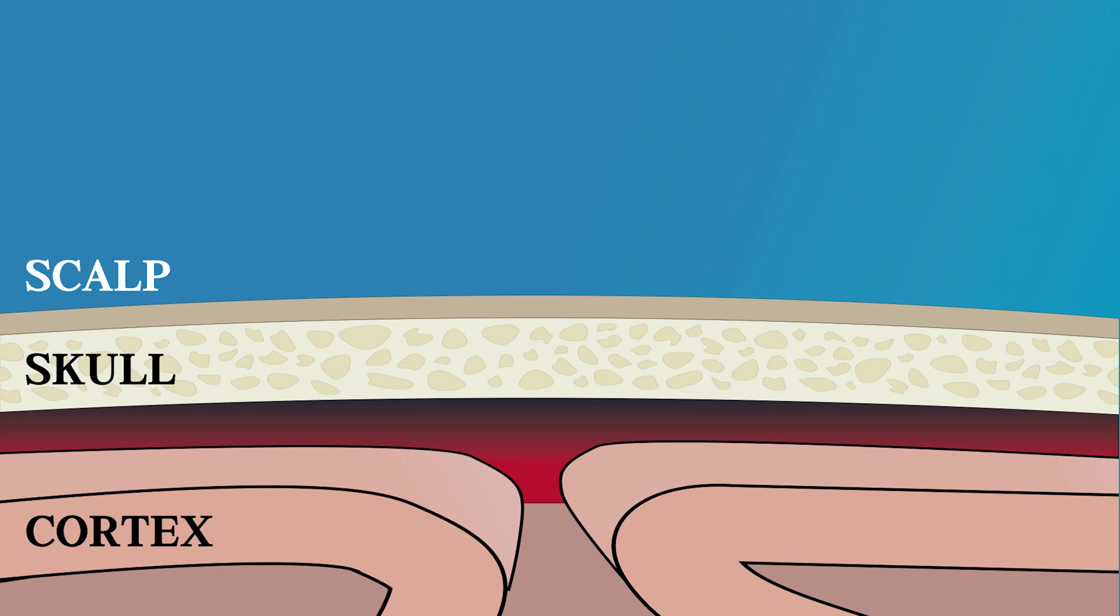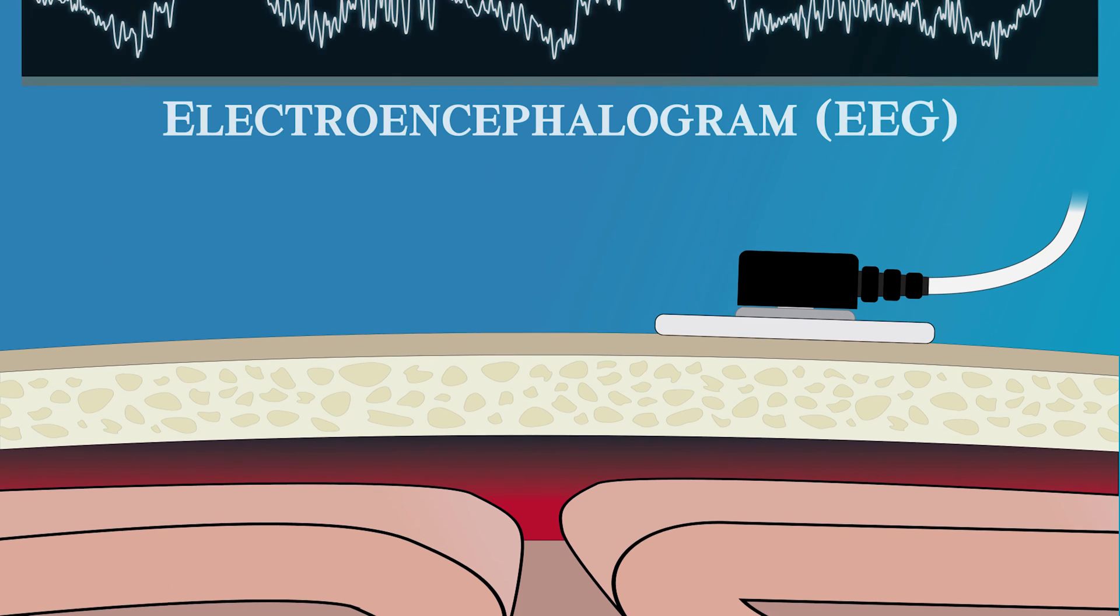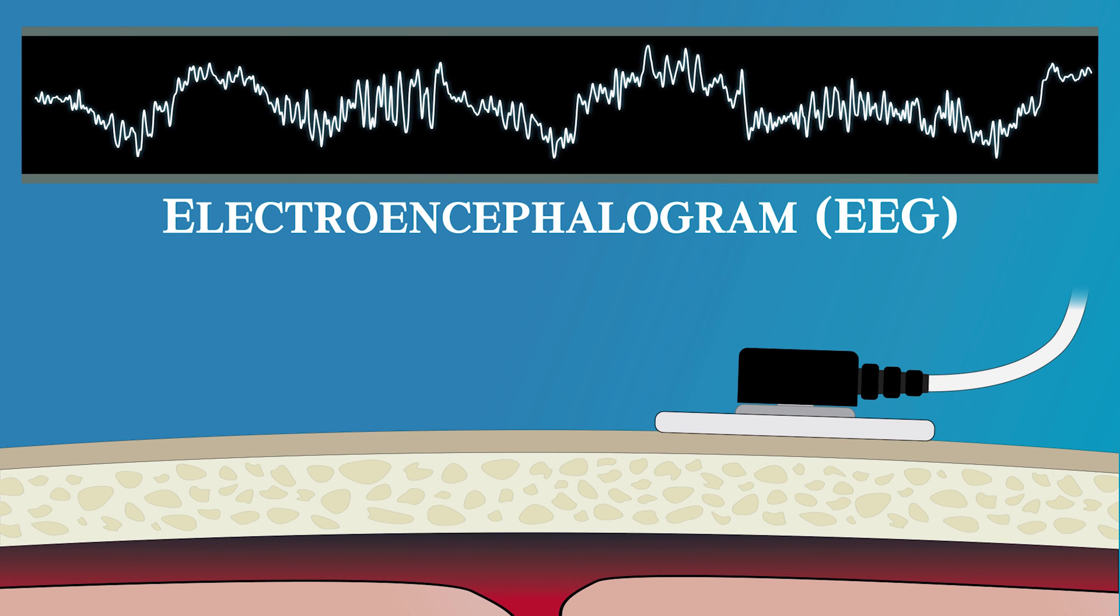In the cortex, pyramidal neurons are particularly well aligned to produce a signal measurable from the scalp. This is how the electroencephalogram, or EEG, measures brain activity.